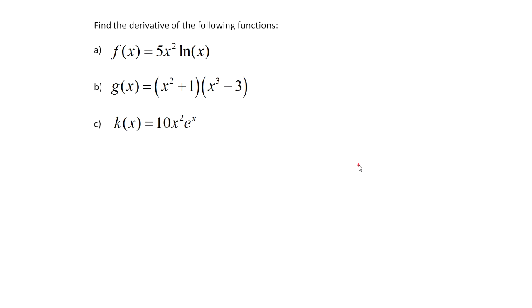Finally, looking at c. c cannot be simplified either. It's the product, for sure. It's the product of 10x² and e^x. So to find this derivative, I'm going to say k'(x) is... I'm going to write out the product twice. 10x² e^x plus... Write it out again. 10x² e^x. This gets prime. This gets prime.